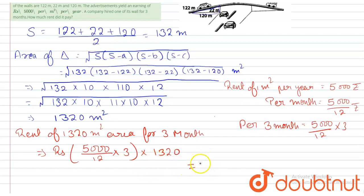equals to rupees 16,50,000. So, the company had to pay rupees 16,50,000.